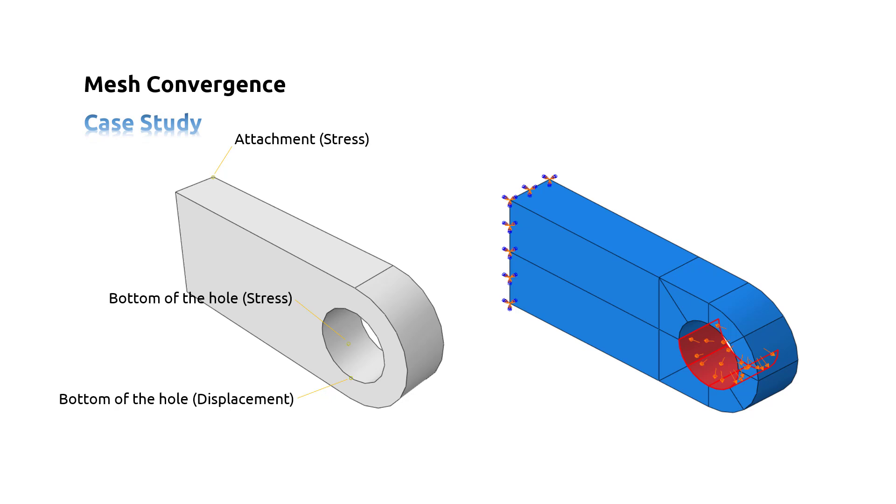The loads and boundary conditions are also indicated. The model is encased at one end, and a uniform pressure load is applied at the bottom side of the hole. The important part of this case study will now be described.